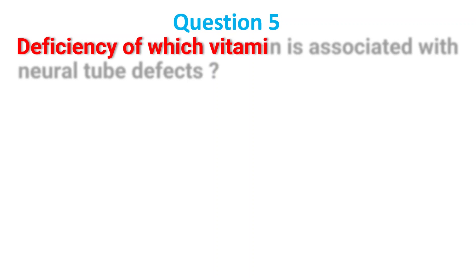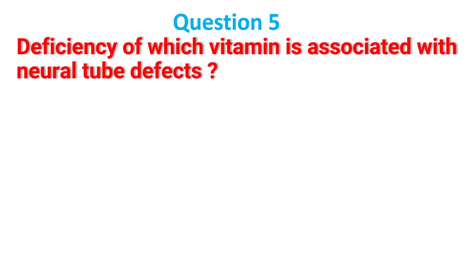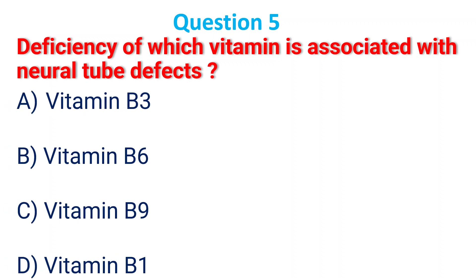Deficiency of which vitamin is associated with neural tube defects? A. Vitamin B3; B. Vitamin B6; C. Vitamin B9; D. Vitamin B1. The answer is C, Vitamin B9.